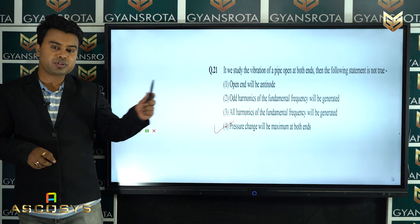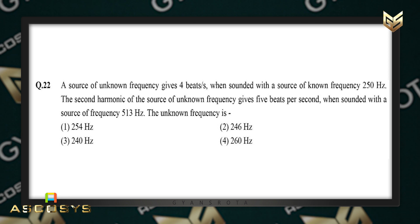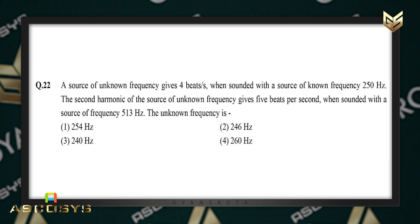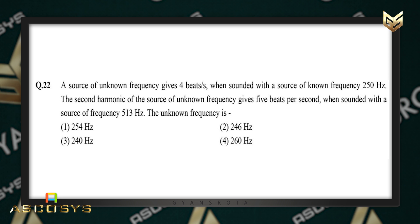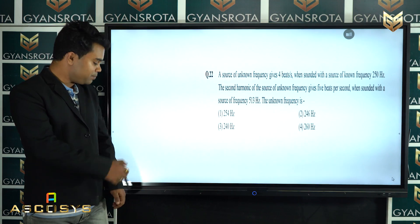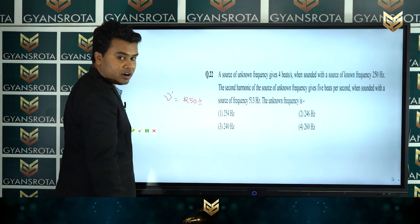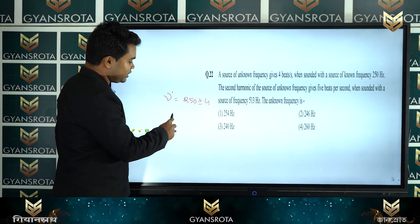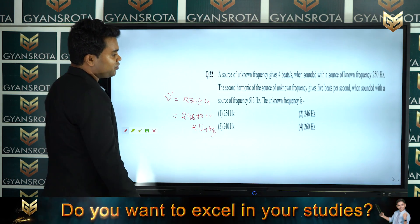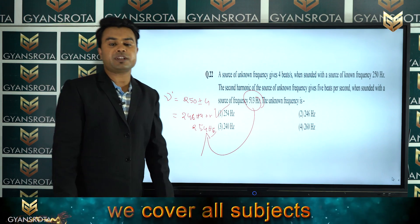Question 22: a source of unknown frequency gives 4 beats per second when sounded with a source of known frequency 250 Hz. The second harmonic of the unknown source gives 5 beats per second when sounded with a source of 513 Hz. The unknown frequency is either 250 ± 4, giving 246 or 254 Hz. Checking the second condition also confirms 254 Hz as the right answer.